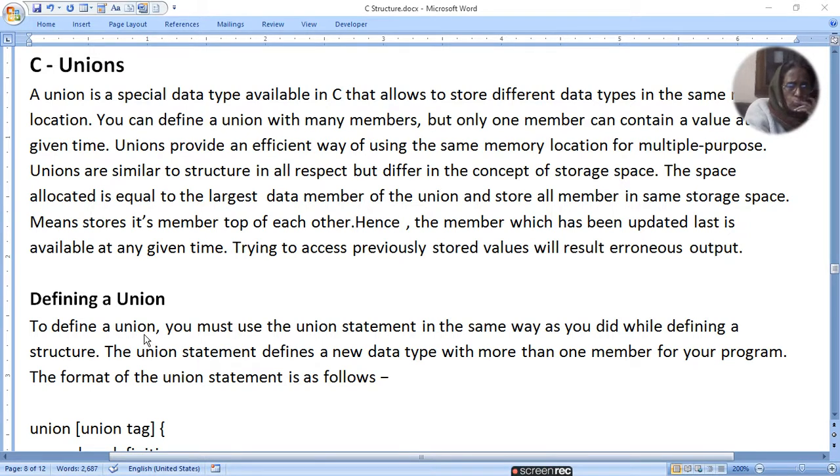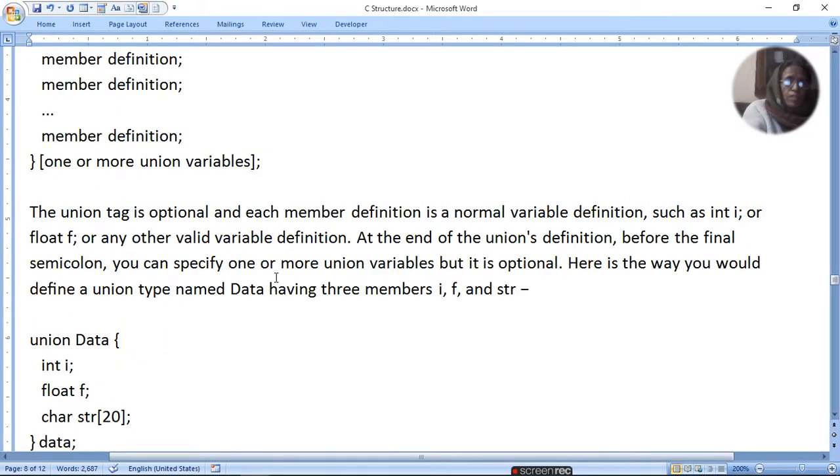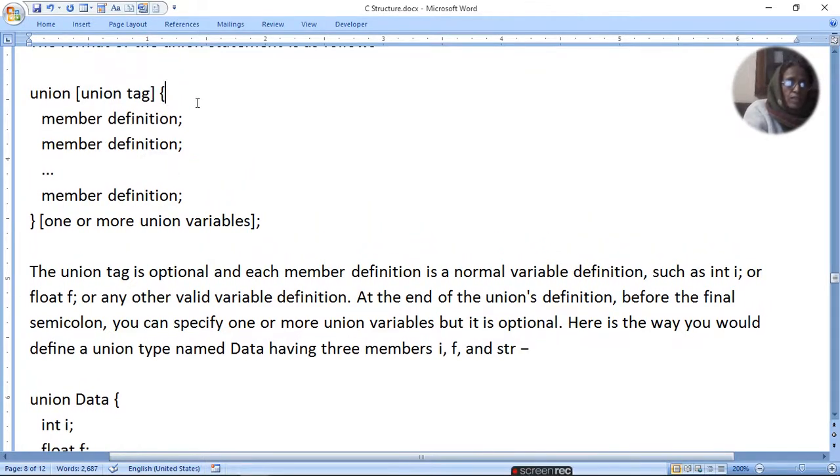To define a union, you must use a union statement in the same way as you did while defining a structure. The union statement defines a new data type with more than one member for your program. The format is: union, union tag, member definitions, and instance creation, just like in structure.